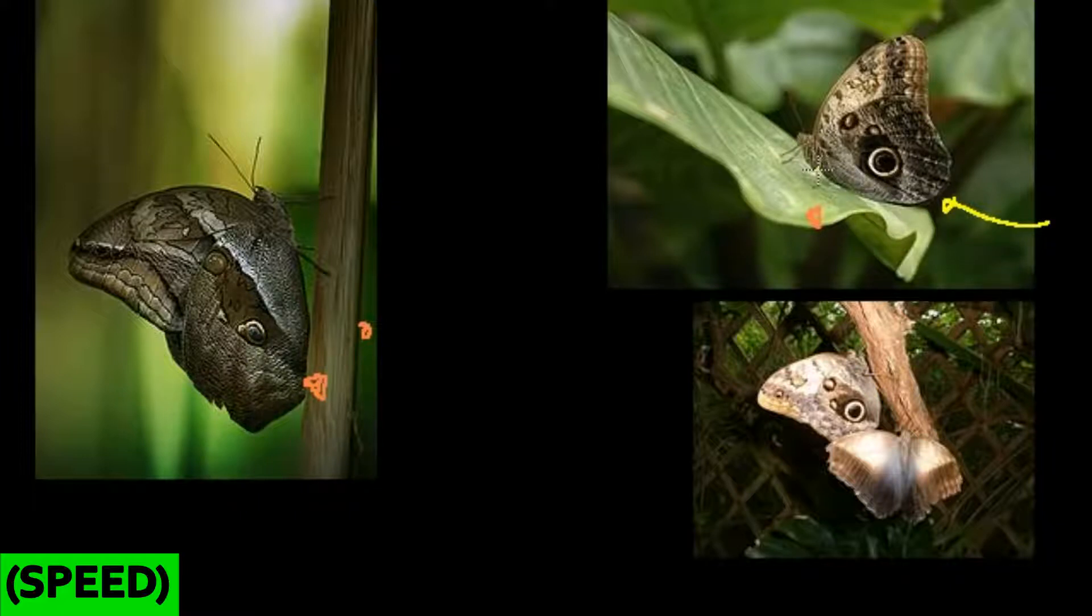When some predator wants to eat one of these things, they go for the thing that looks most substantive. So instead of going for the butterfly's body, they go for the big black thing, thinking it's protein rich. If they bite at that, the wings are going to be clipped a little bit and it's going to suck, but the actual butterfly would survive.